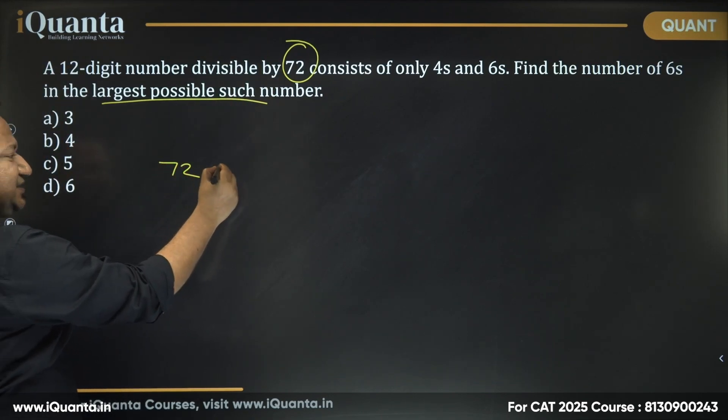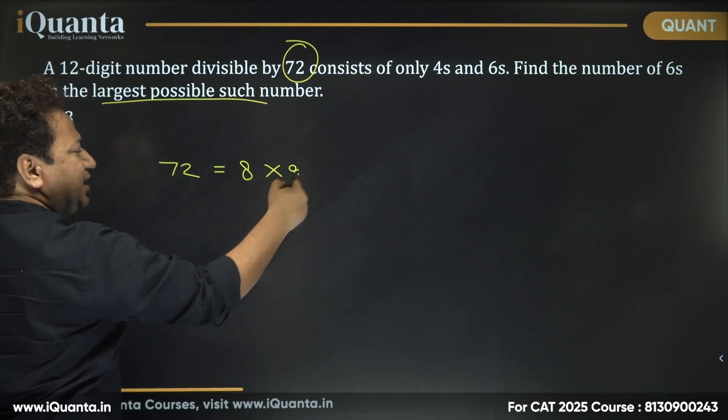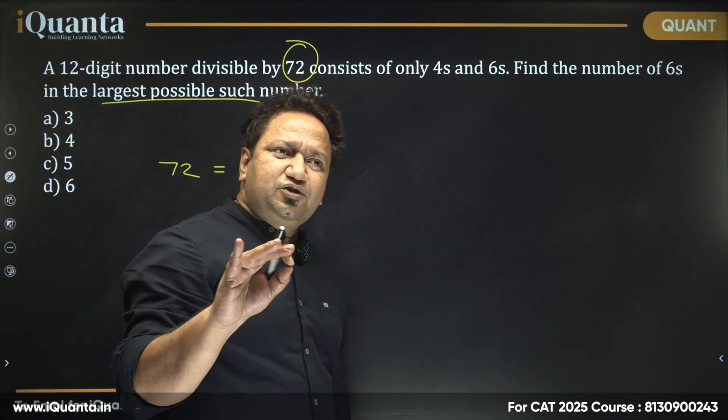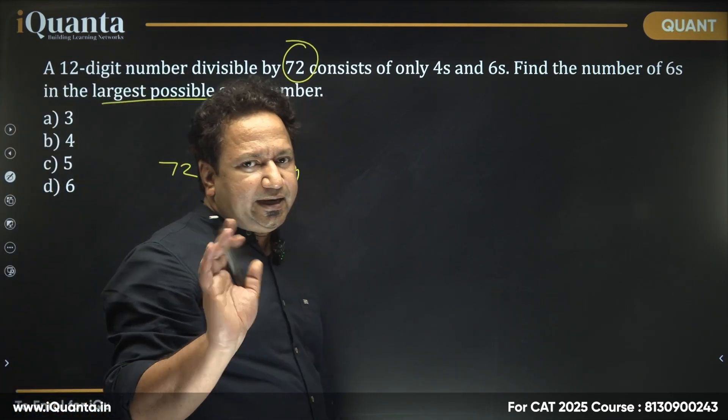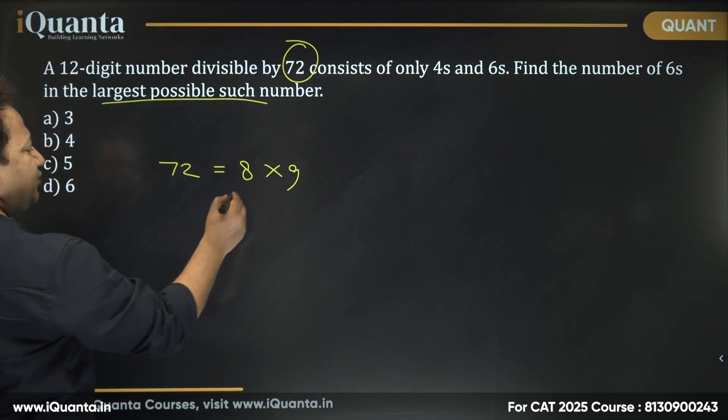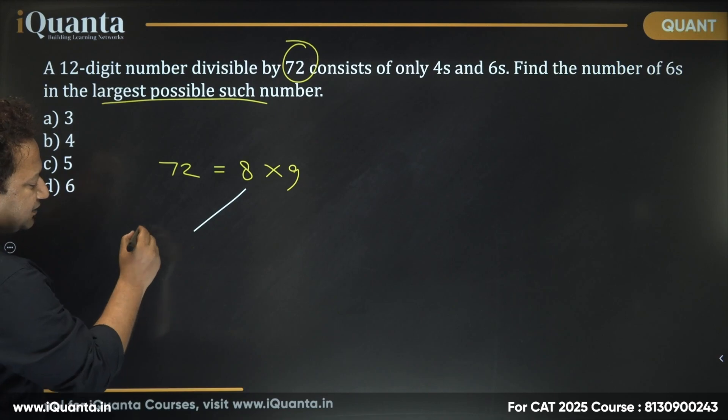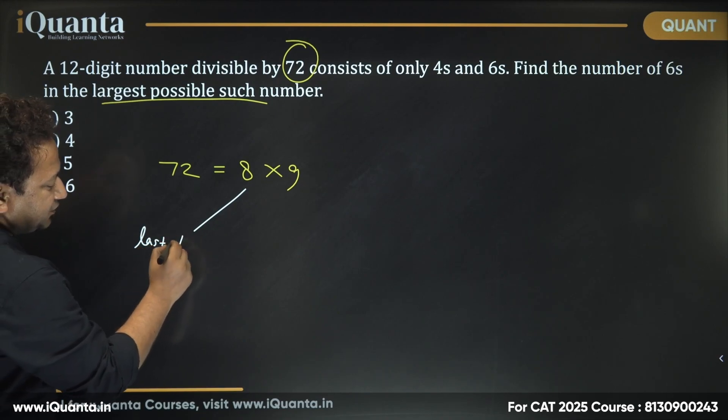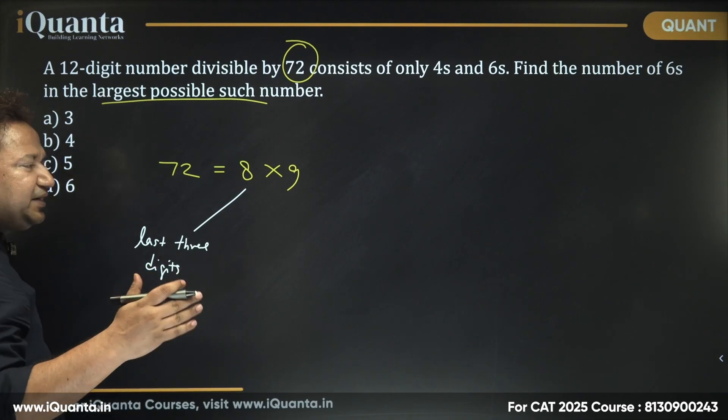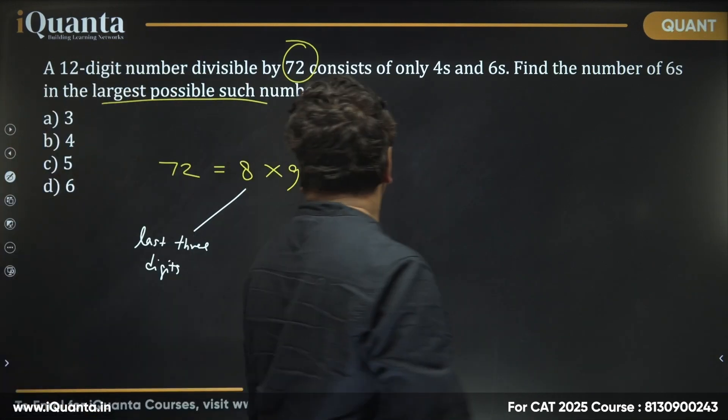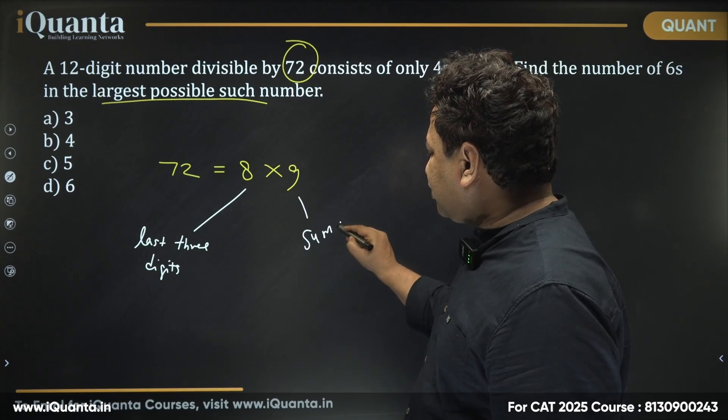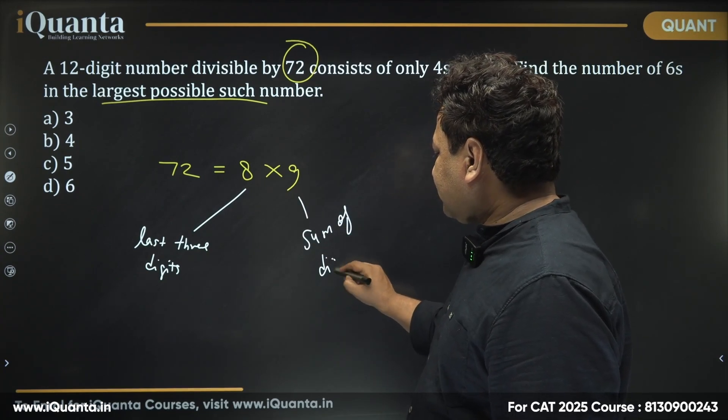Now 72, what is 72? It's 8 multiplied by 9. Which means if a number is divisible by 72, it should be divisible by both 8 and 9. Now, what is the divisibility rule of 8? Last 3 digits of the number must be divisible by 8. For 9, the sum of the digits should be divisible by 9.